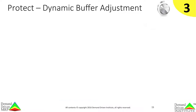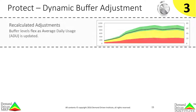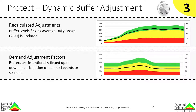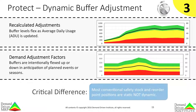The next DDMRP component is dynamic buffer adjustment. Once the initial buffer sizes are set, we know that things will change. DDMRP allows the buffers to flex up or down with either changes to actual usage, or in anticipation of events or seasons. The critical difference here is that most safety stock and order point systems are static and not dynamic.